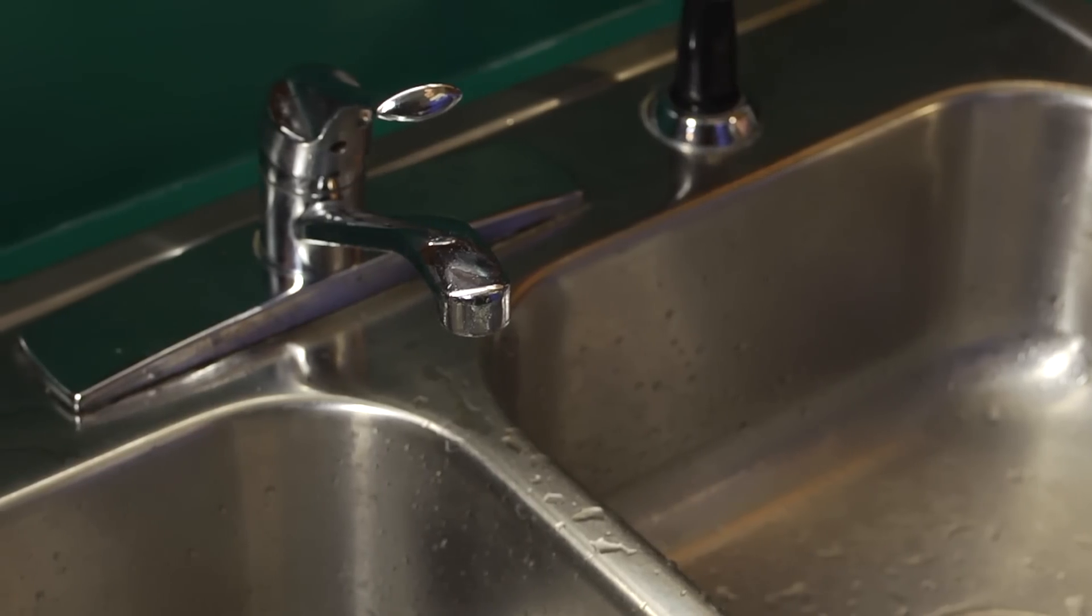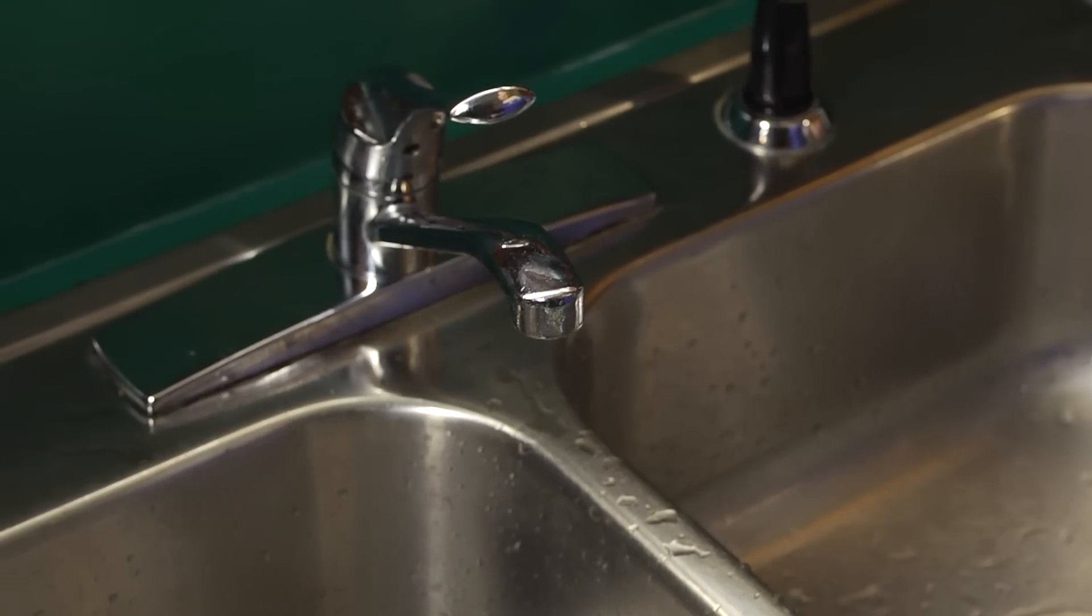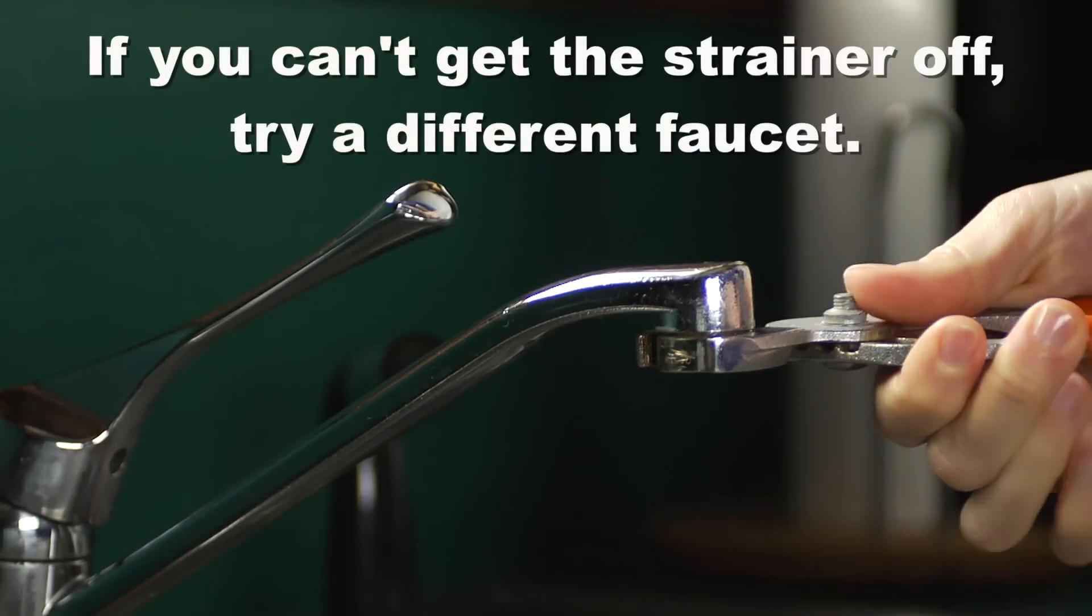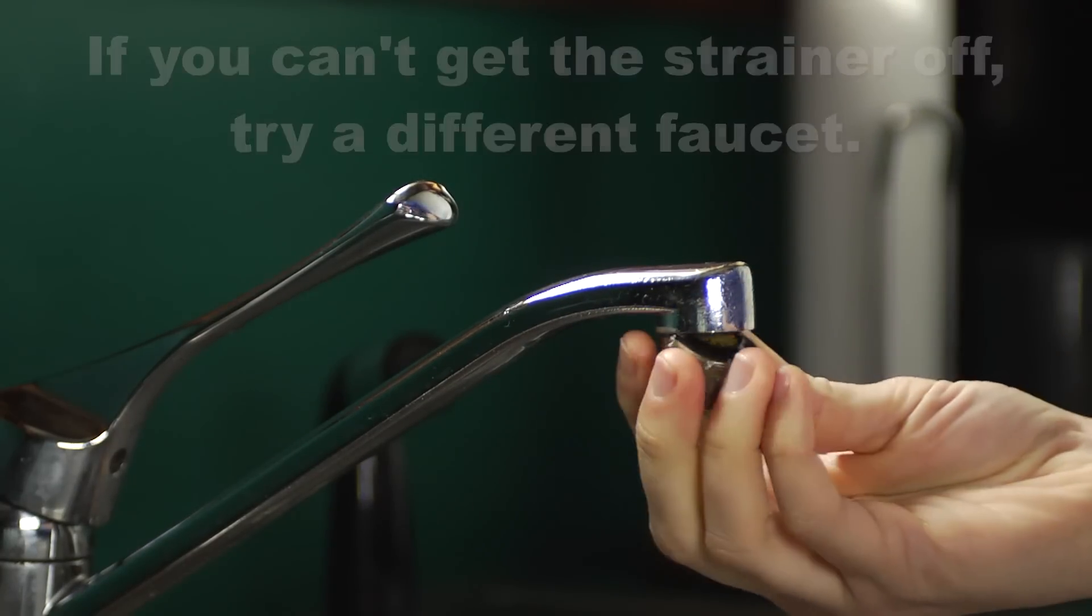It's best to test the water at your kitchen sink because this will tell you what's in the water you're using for drinking and cooking. The first thing to do is remove any kind of strainer or aerator on the faucet.